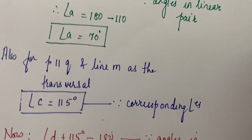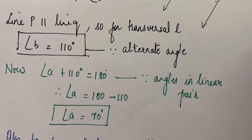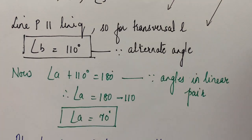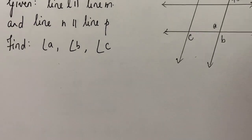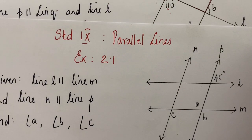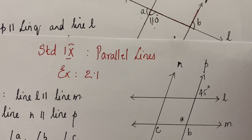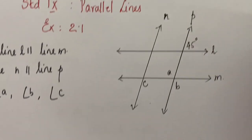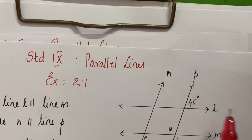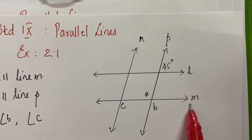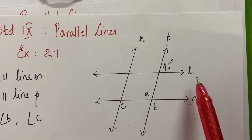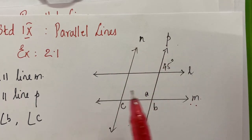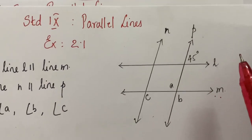I hope you got this sum. Now we go for the next sum — question number 3. We have two pairs of parallel lines: one is line N parallel to line P, and another is line L parallel to line M.